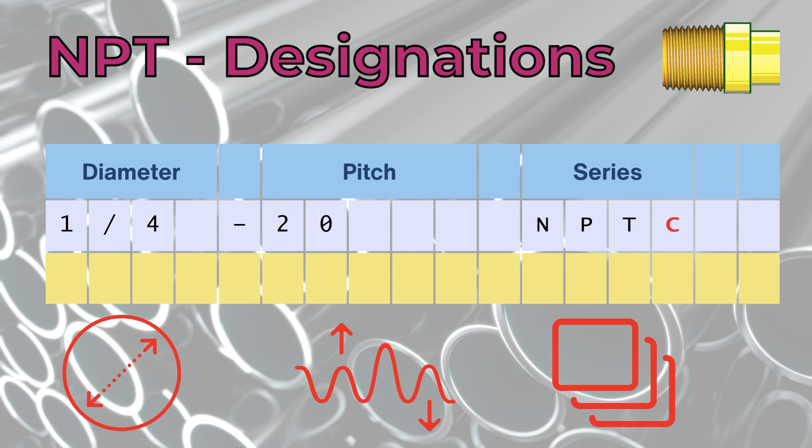For example, C stands for coupling, and L for locknut. Lastly, we can specify the handedness with dash L for left-hand threads. For example, 1-4-20 NPSC dash L is a left-hand, straight, quarter-inch pipe thread with a pitch of 20 TPI for couplings.